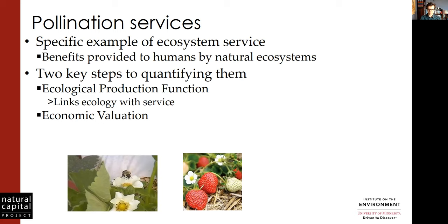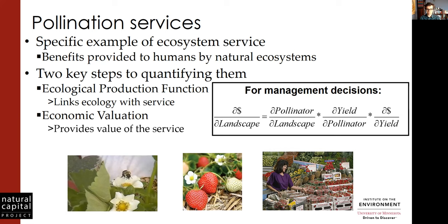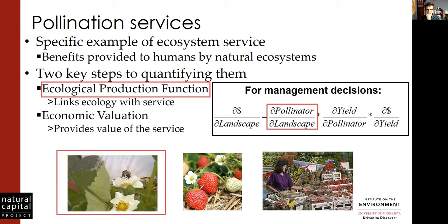The production function links the ecology of the system with the particular service. So if we're thinking about strawberry production, we model the plant-pollinator interaction — the bees landing on the flower, providing pollination that leads to fruit. That fruit has value to people, so if you purchase it at the market, we can link that value back to the service provided by the bee. We do that for management decisions, interested in how changes in the landscape translate into changes in dollar values.